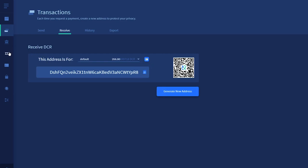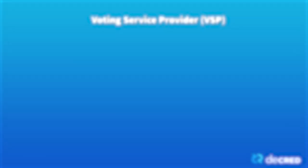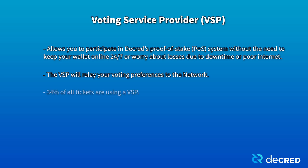Once your wallet has received the Decred you've purchased, click on the tickets tab. You'll need to sign up to a voting service provider, also referred to as a VSP or stake pool. Voting service providers allow you to participate in Decred's proof of stake system without the need to keep a constantly unlocked wallet or worry about losses due to downtime or flaky internet. This means your tickets will safely vote even if your own wallet is offline. Currently, 34% of all tickets are using VSPs.